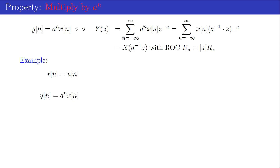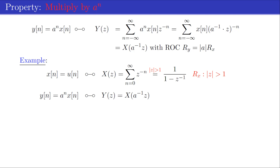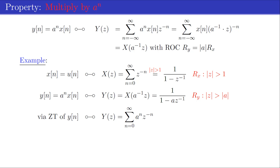As an example, we evaluate a scaled version of the unit step function: x[n] = u[n], for which the z-transform is 1/(1 - z^{-1}) with region of convergence outside the circle with radius 1. Evaluating the z-transform of the scaled version y[n] via the property leads to Y(z), with region of convergence outside the circle with radius |a|. This result is verified by directly applying the z-transform to y[n] = a^n u[n].